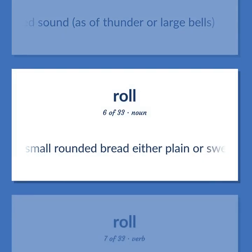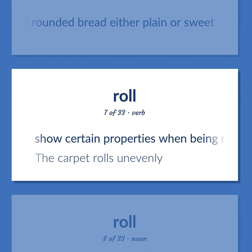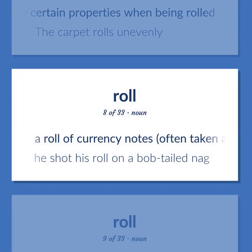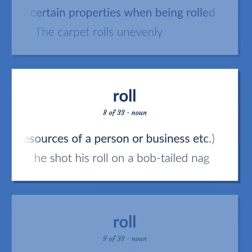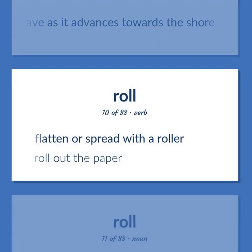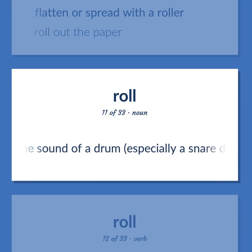Small rounded bread, either plain or sweet. Show certain properties when being rolled — the carpet rolls unevenly. A roll of currency notes, often taken as the resources of a person or business — he shot his roll on a bob-tailed nag. A long heavy sea wave as it advances towards the shore. Flatten or spread with a roller — roll out the paper. The sound of a drum, especially a snare drum, beaten rapidly and continuously.